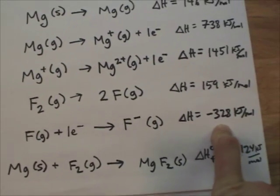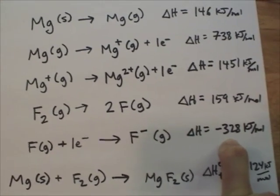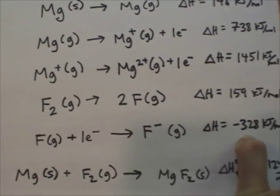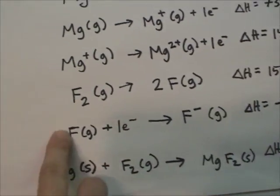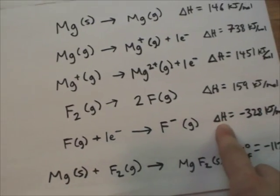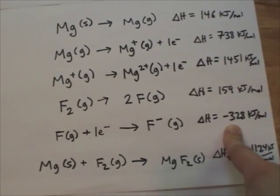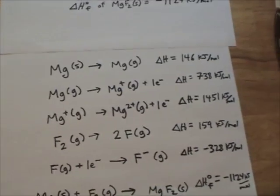So if I wanted to say two fluorine atoms plus two electrons gives two fluoride anions, then the delta H for that process would be negative 328 times 2. And I like to think of this as if we've got a reaction like a log burning, you put one log in, you have a certain amount of heat released. If you put two logs in, you get twice as much heat released.